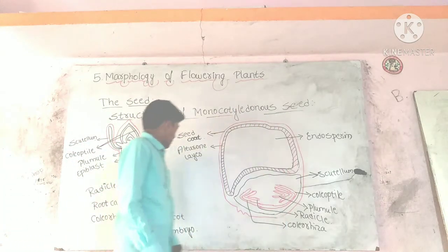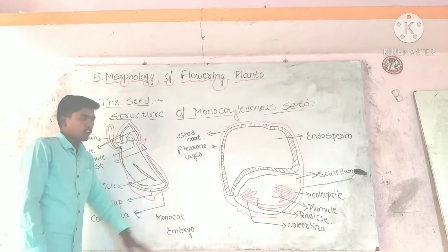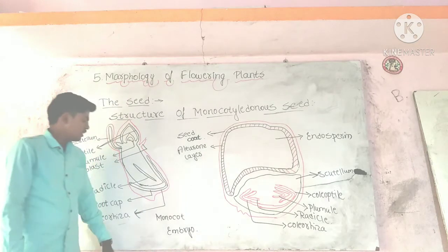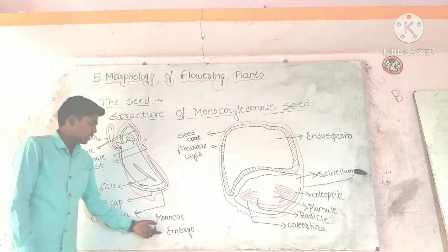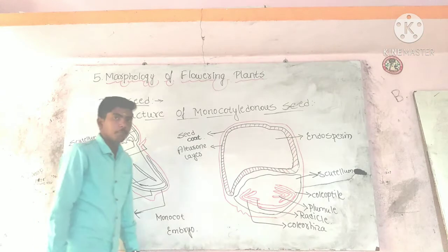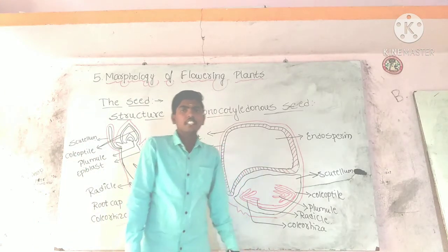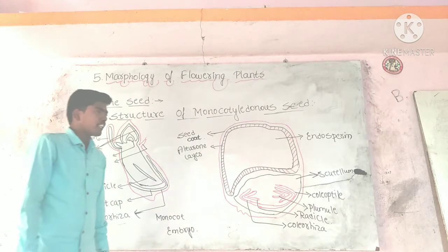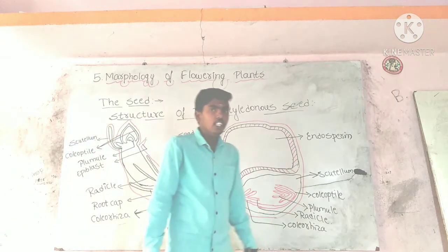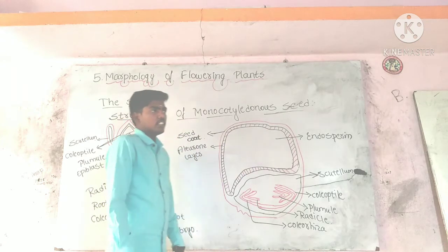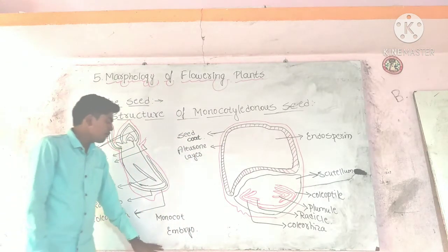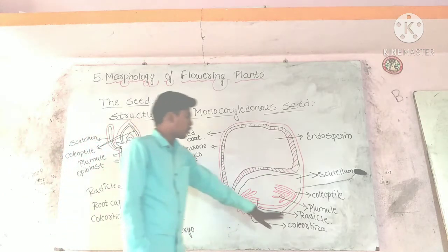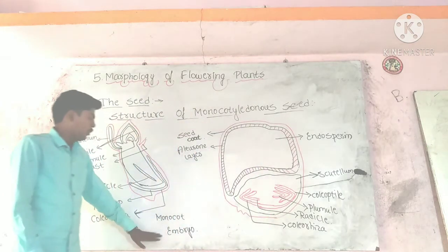Before this, I will explain the structure of the monocot embryo. You will learn this in the second chapter — that is sexual reproduction in flowering plants.